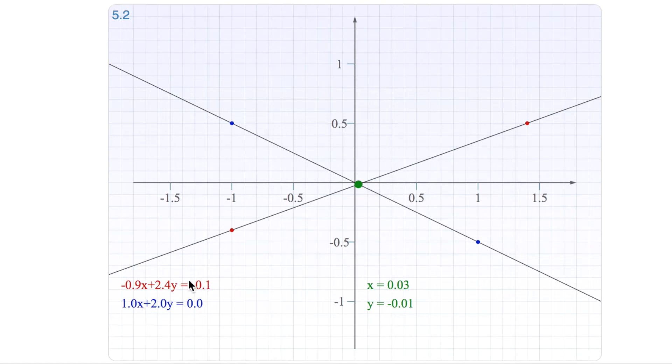So this top equation here represents this line because each point on this line is a solution to this equation. And the same goes for this other equation here. Every point on this other line satisfies the lower equation here. And there is only one point where both of these equations are satisfied, and that is where these lines cross.